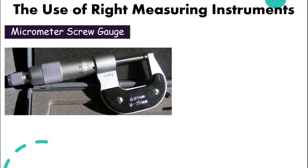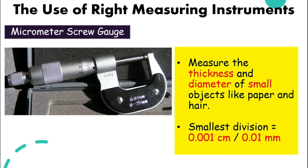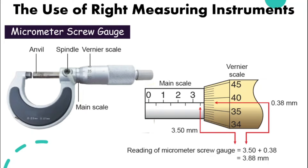How about the micrometer screw gauge? We use this normally to measure the thickness and diameter of very small objects like paper and hair, because the smallest division can go up to 0.001 cm. Just like the vernier calipers, the micrometer screw gauge has two scales: the main scale and the vernier scale. The main scale is divided every 0.5 mm.